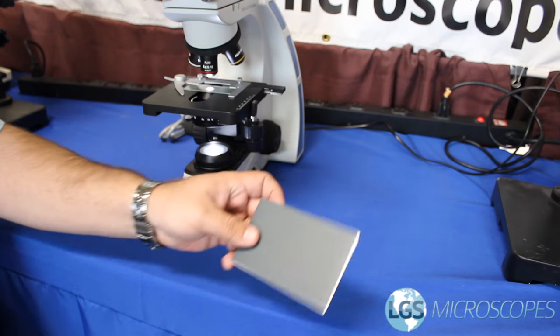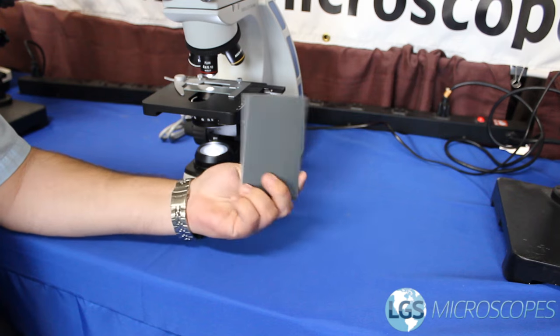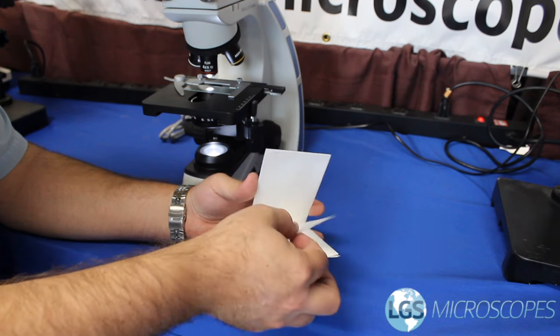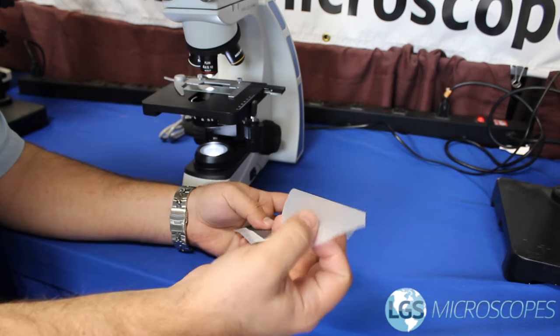To remove the oil you can just use some lens paper. Sometimes it'll come in a little book like this and there's a bunch of sheets in here, sometimes you tear it out, these ones are just kind of laying in here.